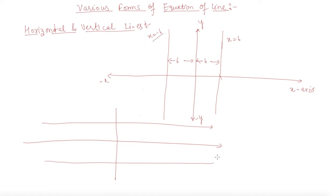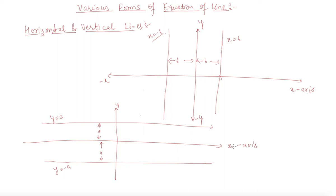Now let us discuss the case when the line is parallel to the horizontal axis. Then the equation of the line will be y equal to a, and if it is below the horizontal axis, then it is y equal to minus a. This distance is a and this is also a. This is the y-axis and this is the x-axis. This is the case when two lines are either parallel to the x-axis or parallel to the y-axis.